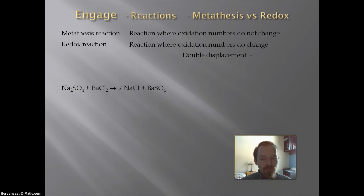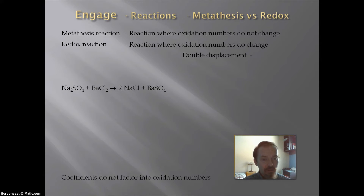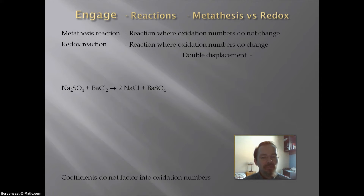This equation is balanced and the formulas are correct — we always have to start at that point. The coefficients do not factor into oxidation numbers, so I will not factor them in. When you want to determine this, you want to do the oxidation numbers for each compound in the reactants and each compound in the products separately.